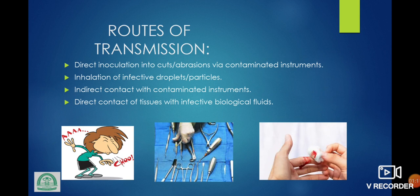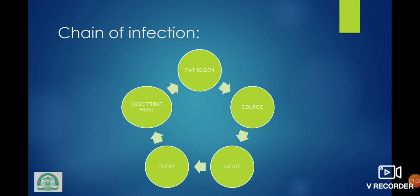Routes of transmission of infection: direct inoculation into cut via contaminated instruments, inhalation of infective droplets or particles, indirect contact with a contaminated instrument, direct contact of tissues with infective biological fluids. Chain of infection: pathogen to source; source can be entered into the susceptible host and causes the infection.